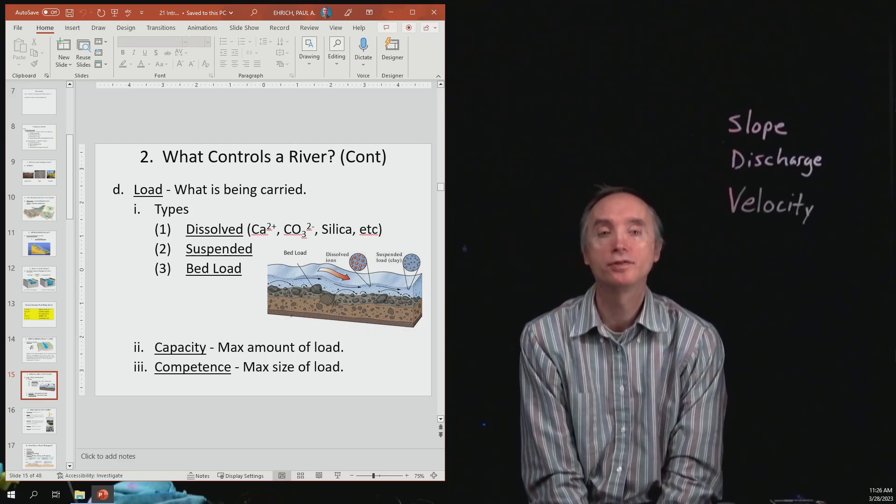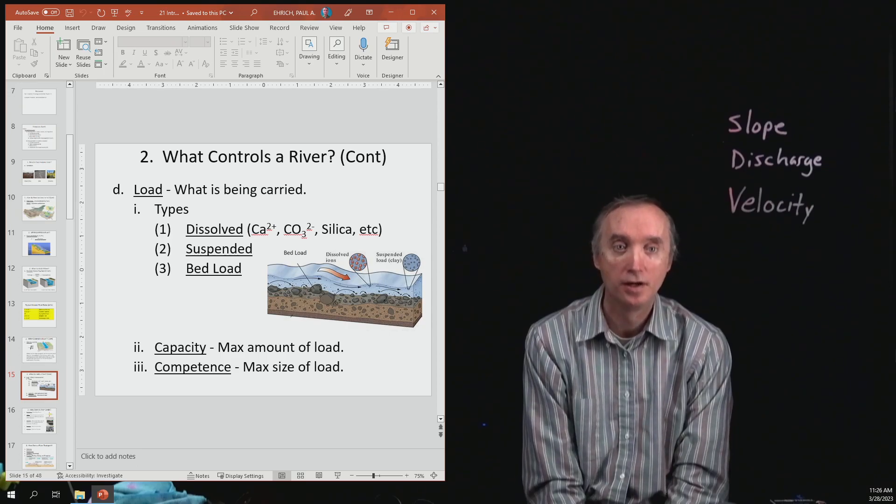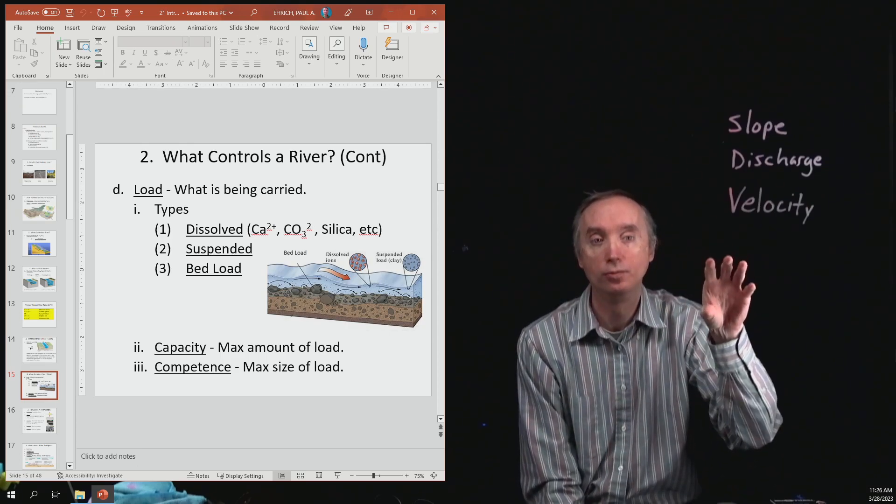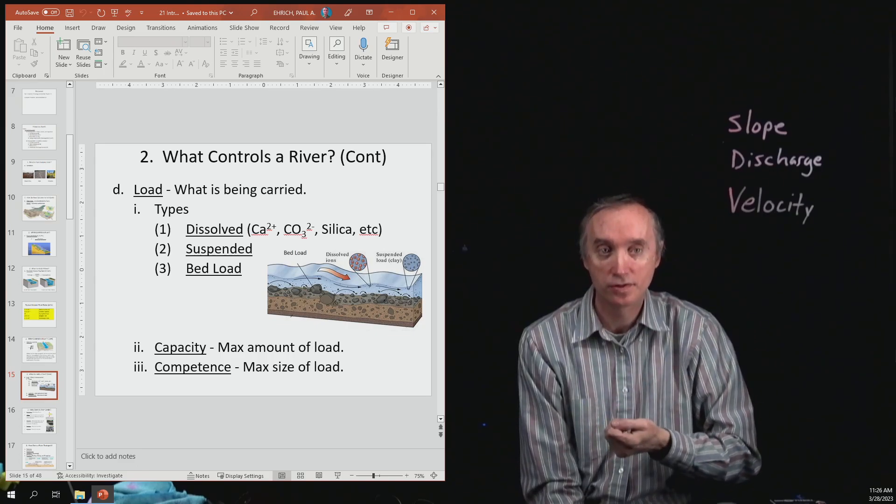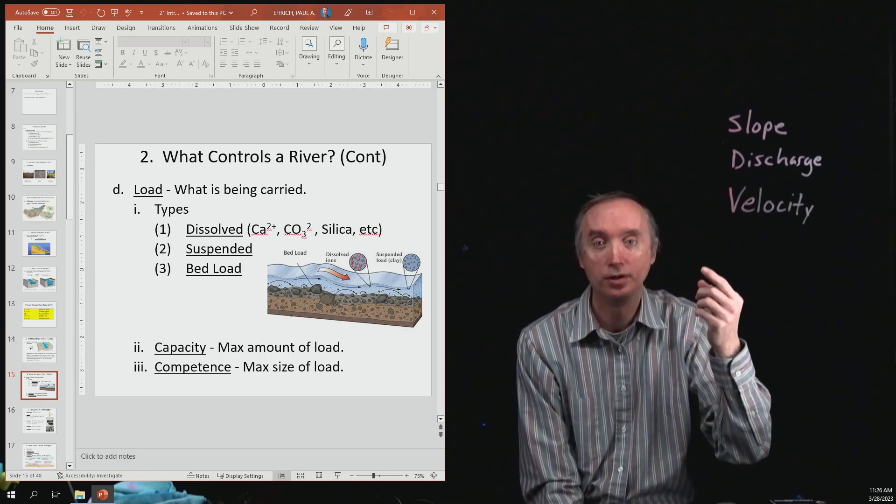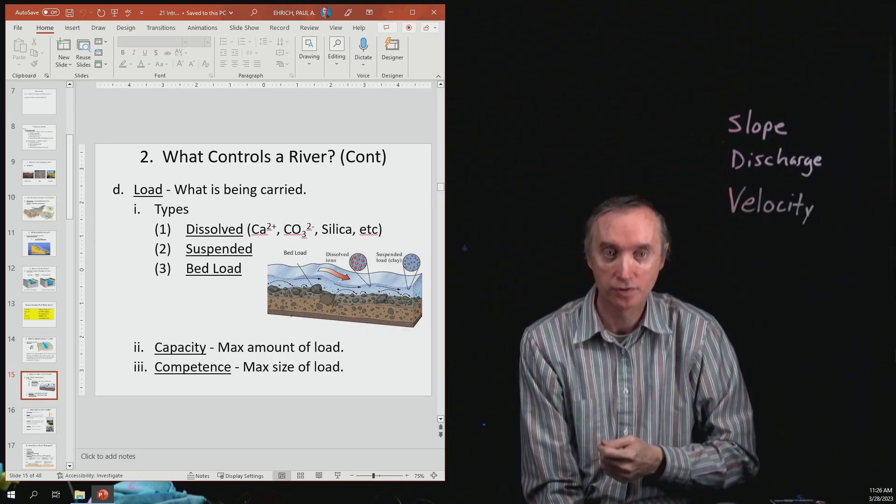We're back and now we want to talk about our last control on a river. We mentioned that the slope controls what the river is going to do, the discharge is going to control it, and now we know that the velocity of the river is going to control what it's going to do.